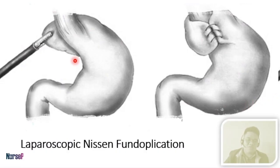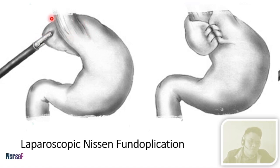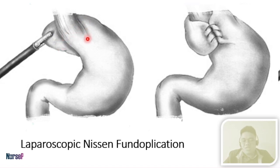This is how a Nissen fundoplication looks. As you can see, the fundus of the stomach is being utilized to tighten the lower or distal end of your esophagus, with the aim again to strengthen your LES.